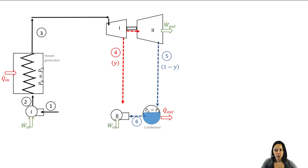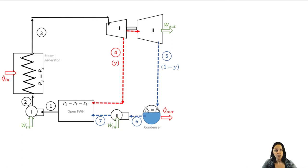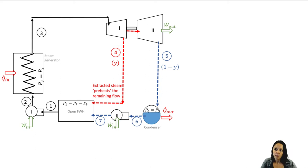Then it undergoes an ideally isentropic compression process to pump it up to the same pressure as state one. This is the open feedwater heater. It's a direct contact heat exchanger because the cooled-off fluid at state seven mixes together with the still very high-temperature fluid at state four. What comes out at state one is at some temperature in the middle. Essentially, this extracted steam preheats all the rest of the flow that was allowed to fully expand in that second expansion stage within the turbine.